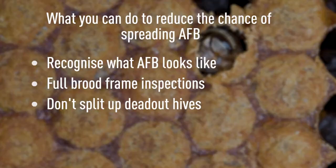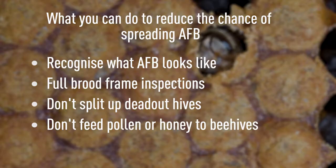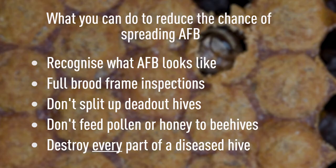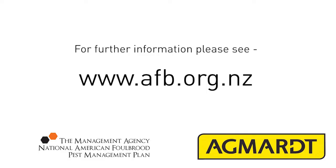If you've got a dead-out hive — one that's died for some other reason — it's a really good idea to just strap it together and repopulate it with a single colony or swarm, rather than taking it all apart and splitting it between lots of hives, which means you can spread the disease to many hives. It's a really good rule not to feed pollen or honey to beehives, because that's a great way of spreading the disease. And lastly, when you do find American foulbrood, it's important to destroy everything. Don't be tempted to take honey off — legally you can't in any case — but you must destroy the hive, the honey, and any other woodware, boxes, lids, or feeders that have been used with the hive.